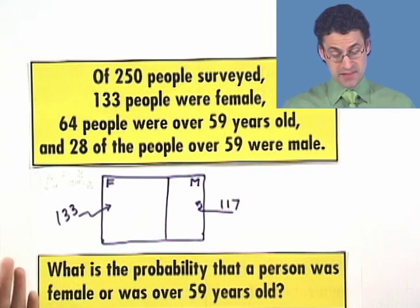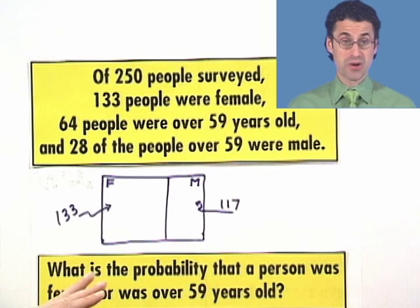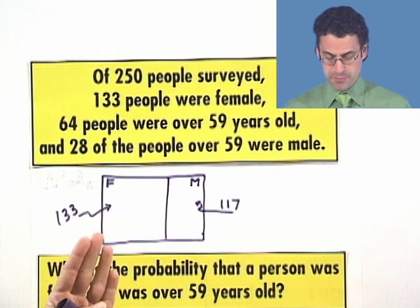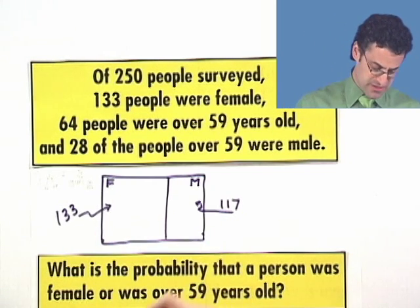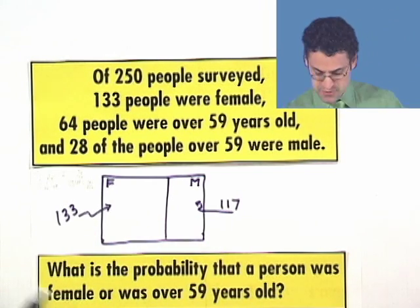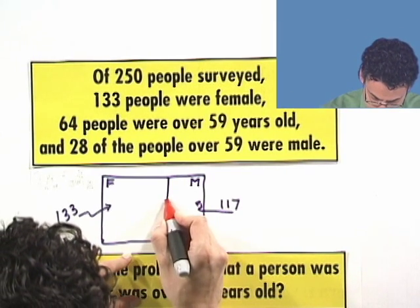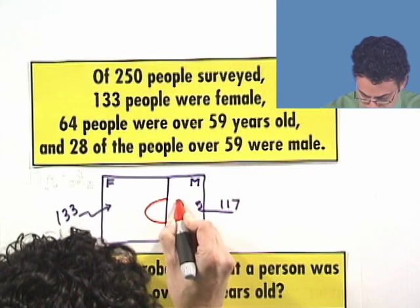Now, we're told that some people were over 59 and some were not. That means there's going to be some people that are female that are over 59, and some people that are male that are over 59. So, there's going to be this overlapping piece, which I'm going to draw right here on the border in here.